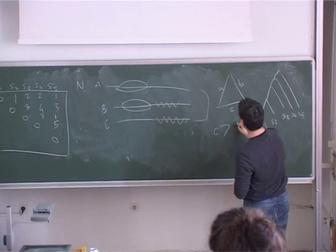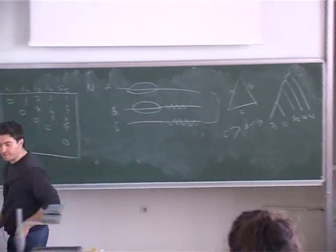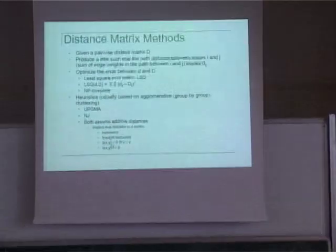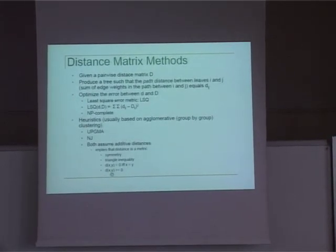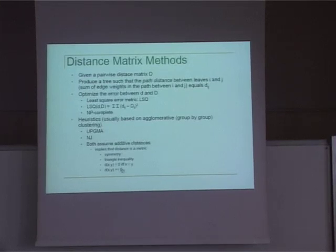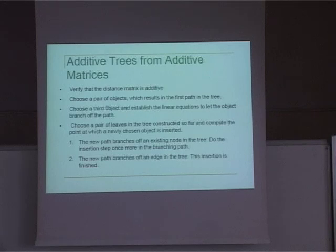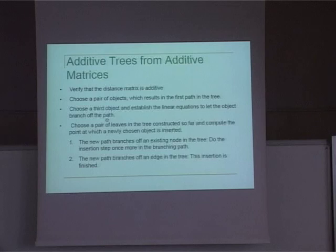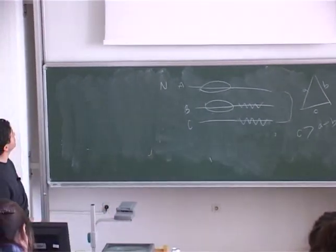After checking the constraints, choose a pair of objects randomly to form your first path in the tree. Then choose a third object and establish a system of linear equations to determine where it branches off the path. Let me run this on the example. Let's choose C and D; their distance is 6, so that is your first branch.